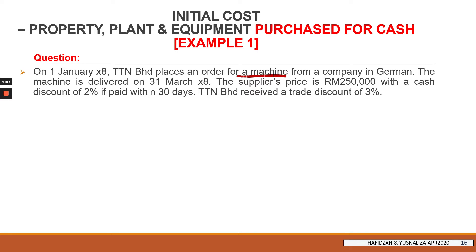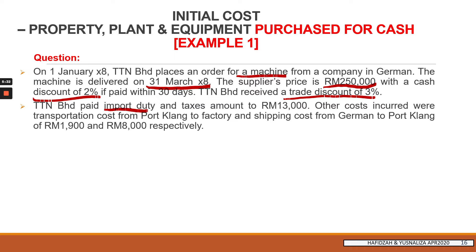31st March is the date of initial recognition because that is the date the machine is received from the supplier in Germany. The supplier price — also known as purchase price or invoice price — is given with a cash discount and a trade discount. Both the 3% and 2% discounts must be deducted against the $250,000 purchase price. Import duties and taxes are also part of the purchase price and must be added.